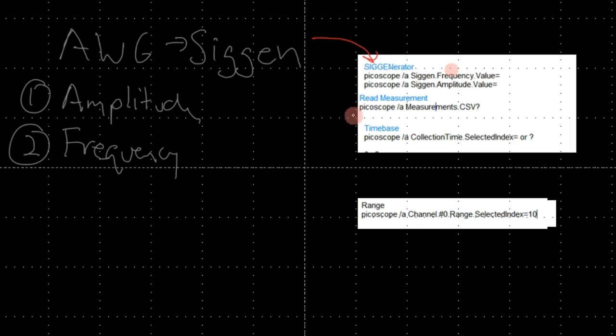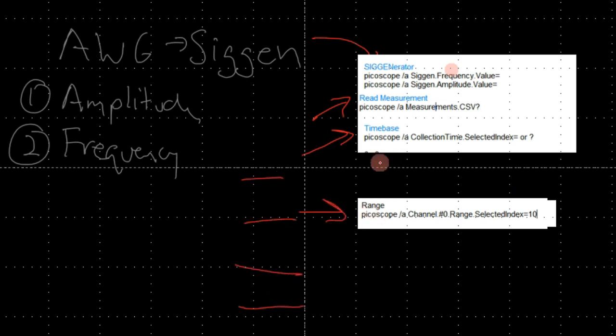Now I've gone over everything. We have the signal generator for amplitude and frequency. We have the ability to read measurements — which you set up in the PicoScope graphical interface. The way I'm showing you how to use this oscilloscope is very similar to how you'd use a real oscilloscope communicating with a computer via GPIB or an Agilent oscilloscope. The range is the vertical setting, the time base is the horizontal, and we have the way to read measurements, define frequency, and define amplitude.